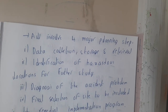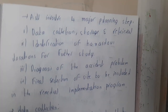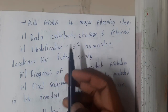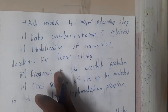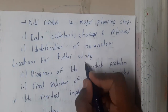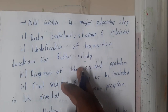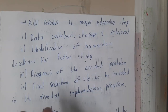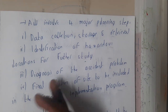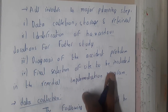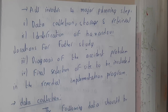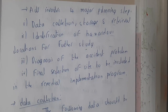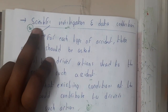All four methods share common steps. These include: data collection, storage, and retrieval — how you collect, store, and access data when required. Also, identification of hazardous locations for further study, diagnosis of the accident problem to understand exactly what happened, and final selection of a site to be included in the remedial implementation program if the issue needs to be escalated to a higher authority.